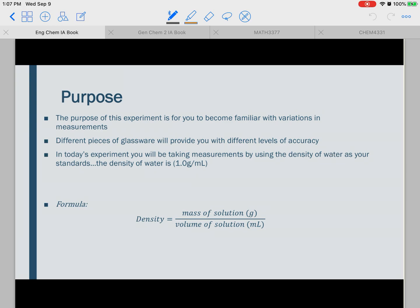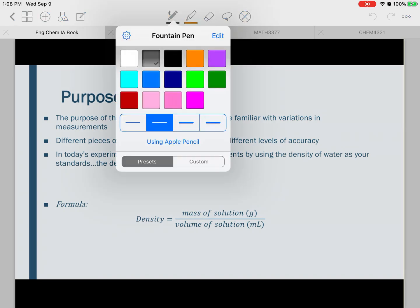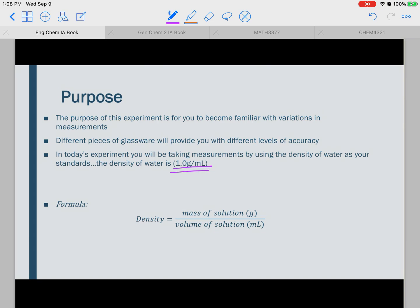So the purpose of this experiment is for you to become familiar with variations in measurements, and so what that means is that different pieces of glassware are going to provide you with different levels of accuracy. So in today's experiment, we're going to be taking measurements by using the density of water as our standard, and I went ahead and wrote the density of water right here for you guys, so make sure you know that.